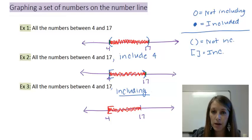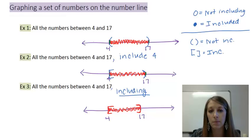This one is including both endpoints. My left is going to have a bracket straight on top of the tick mark, and my right is going to have a bracket straight on top of the tick mark. That means that this number line includes the endpoint of 4 and includes the endpoint of 17 and all the numbers in between.